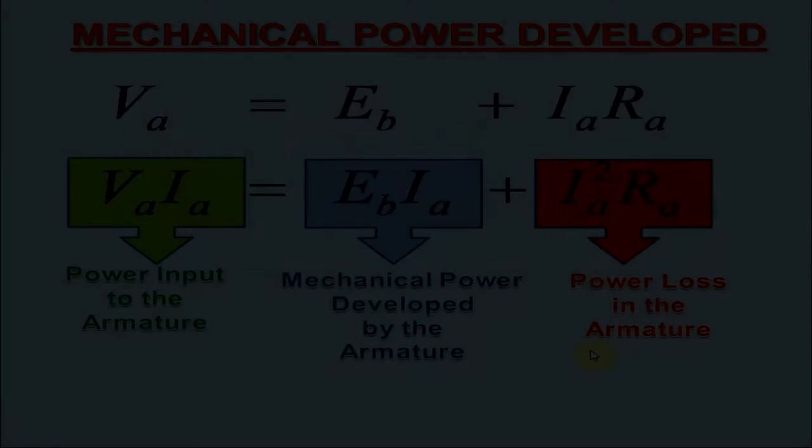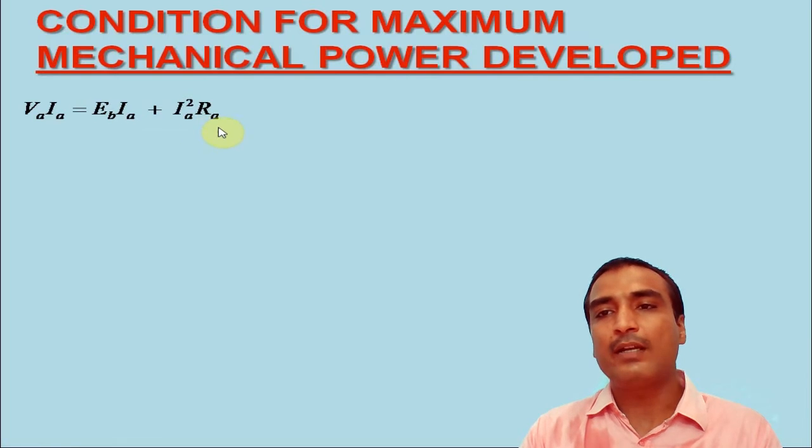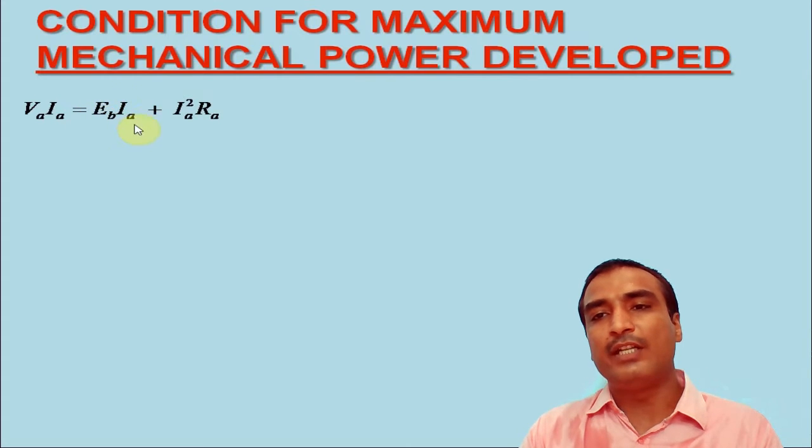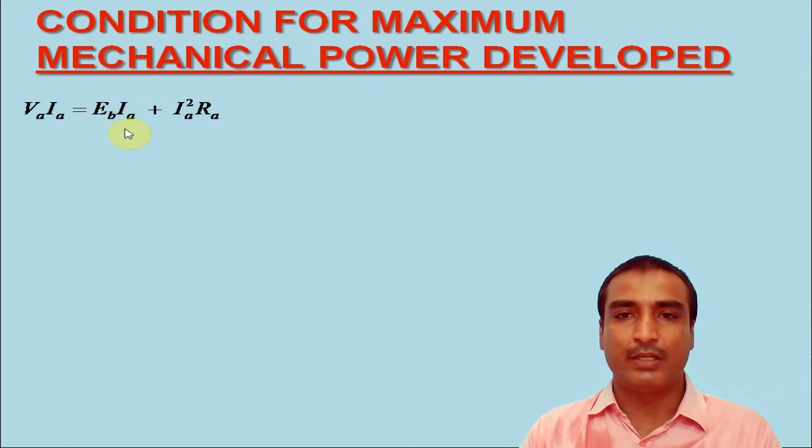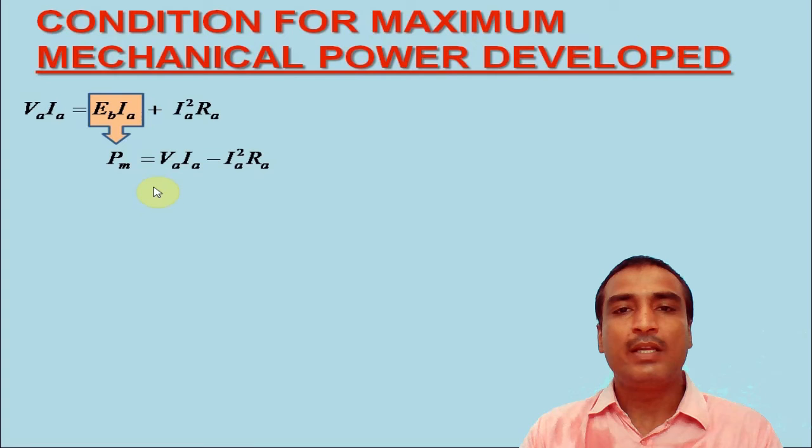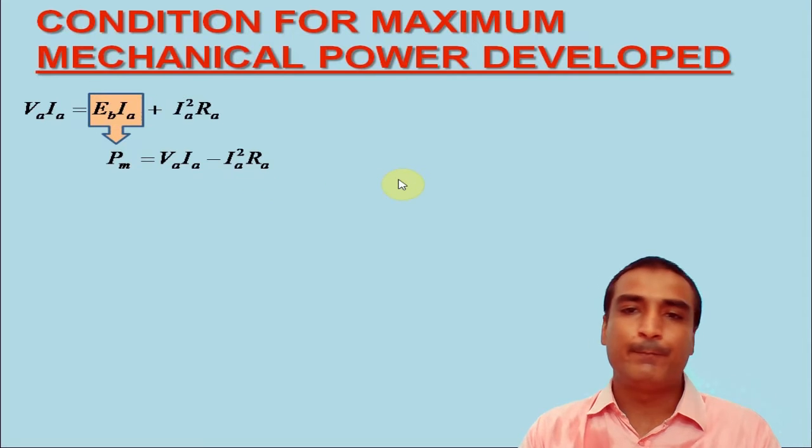Write once again the power equation as VA IA is equal to EB IA plus IA square RA. Now, the condition for maximum mechanical power developed by the power equation as PM, we may rewrite the power equation as PM is equal to VA IA minus IA square RA.